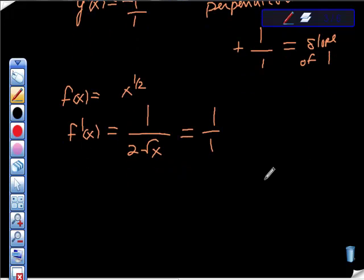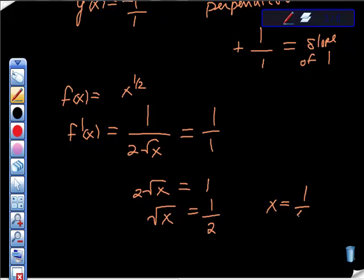I'm going to do all of my math here. We get 2 square roots of x is equal to 1, square root of x is equal to 1 half, right? I'm just dividing by 2. X is equal to, remember, we're just going to use principal roots here. We would square both sides, so we would get x is equal to 1 fourth.